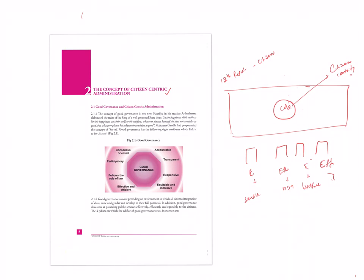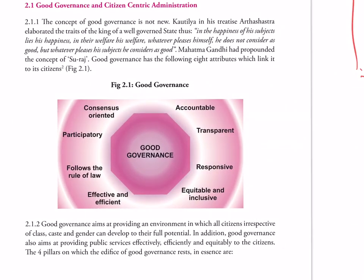What are the components of good governance? One is accountability, transparency, responsiveness - ATR. And then equity and inclusiveness, efficiency and effectiveness, rule of law, and consensus orientation and participation. I call it CPR - cardiopulmonary resuscitation for an elephant. Action taken report has been submitted, it has led to cardiopulmonary resuscitation, and then efficiency and effectiveness, equity and inclusiveness. In this way, you remember that.